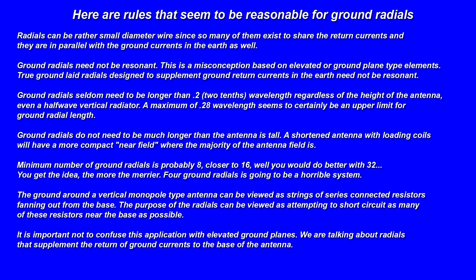True ground laid radials designed to supplement ground return currents in the earth need not be resonant. Ground radials seldom need to be longer than two-tenths wavelength, regardless of the height of the antenna. Even a halfway vertical radiator, a maximum of 0.28 wavelength, seems to certainly be an upper limit for ground radial length. Ground radials do not need to be much longer than the antenna is tall. A shortened antenna with a loading coil will have a more compact near field. The minimum number of ground radials is probably eight, closer to 16.